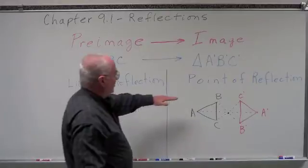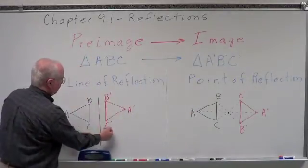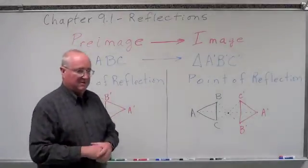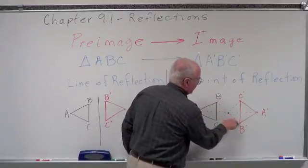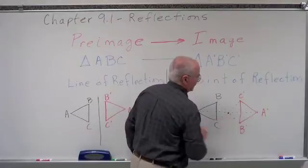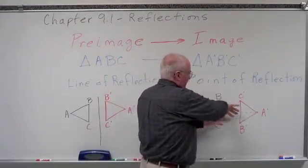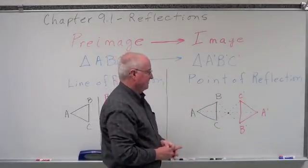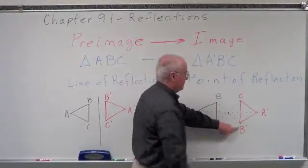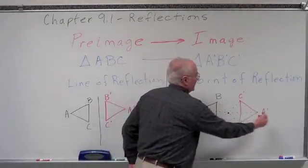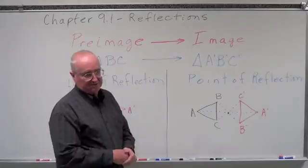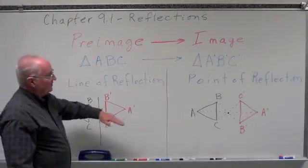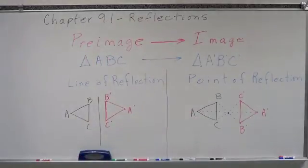We also have what's called a point of reflection. On a point of reflection, we're going to reflect point B across this point — through this point to the other side — the same distance to the other side. Notice that it's going to get flipped, so this thing is going to get a turn put into it. B becomes B prime, C ends up on top, and A ends up where we'd expect it. That's the difference between a line of reflection and a point of reflection — we can reflect across a line or across a point.